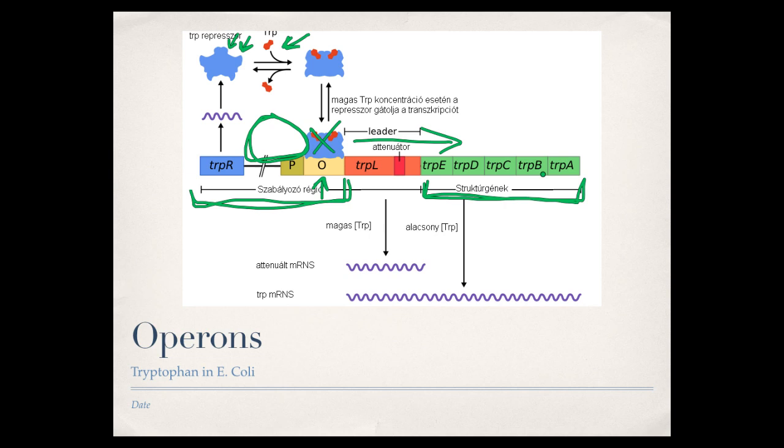This is an example of allosteric inhibition where our repressor flips between an on state, which might look something like this, where it can bind to the repressor right there, or an off state where it doesn't necessarily fit. And when the tryptophan binds, it's going to lock it into that on position to where it can actually bind down there and stop the process from happening.